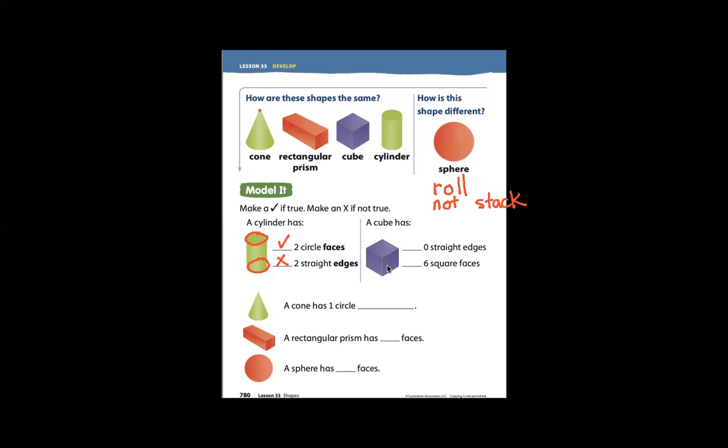What about a cube? Zero straight edges. Well, that's not true. It has many straight edges.